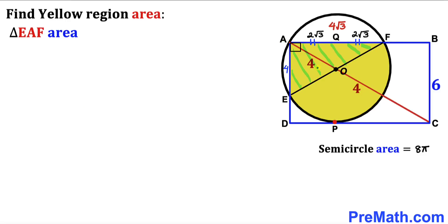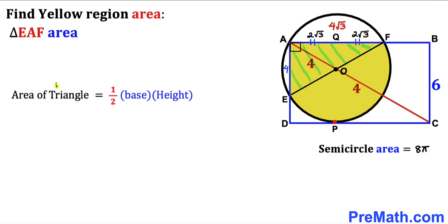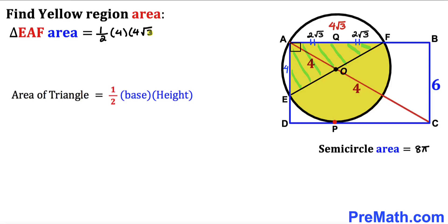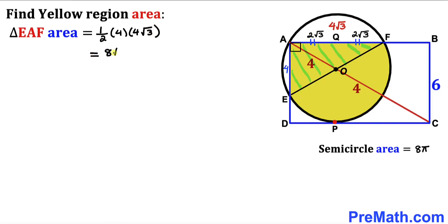Now let's calculate the area of right triangle EAF. Using Area = ½ × base × height, where base AF = 4√3 and height AE = 4. So the area is ½ × 4√3 × 4, which simplifies to 8√3 square units.